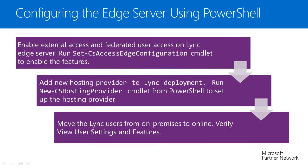Let's have a look at edge server configuration in detail. The edge server will act as a proxy between on-premise and online — all SIP signaling traffic will flow between on-premise and online via the edge server. First, you need to enable remote access and federation on the edge server using the Set-CsAccessEdgeConfiguration cmdlet from PowerShell. Once completed, you add Office 365 as a new hosting provider for on-premise using the New-CsHostingProvider cmdlet. Once completed, you can test user movement from on-premise to online — if settings are correct, an administrator should be able to move a user from on-premise to online successfully.